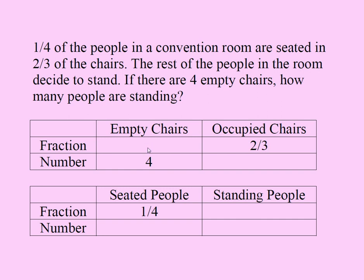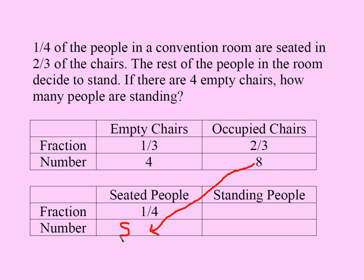Let's put one-third in the empty chairs fraction spot. Now, if one-third of something equals four, then two-thirds of the same thing should be eight. So eight goes in the occupied chairs number spot. And critically, if you have eight occupied chairs, then you have eight seated people — eight occupied chairs means eight seated people.